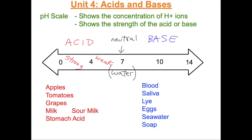If the pH is between 7 and 10, then it is a weak base, such as hand soap. If the pH is between 10 and 14, then the substance is a strong base, such as drain cleaner.